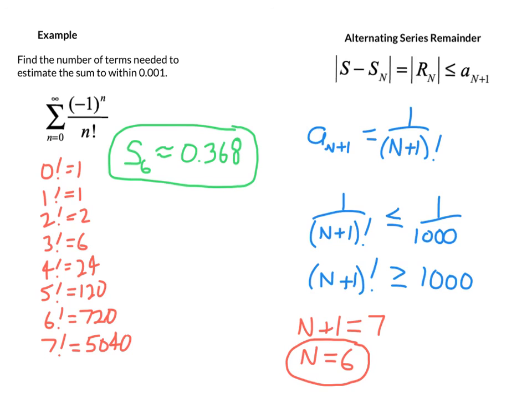So two cases we looked at. One, we could calculate the number of terms algebraically because of the type of series. If you start getting involved in factorials, there's not a ton of algebra you can do, so you have to use an inductive approach and determine when that value crosses the threshold that would make your estimate accurate enough.